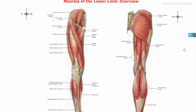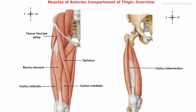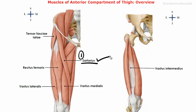Let's start with the anterior compartment of the thigh. Here we can see the muscles of this compartment. We'll see the location of these muscles one by one, then learn individual muscles in detail under four headings: origin, insertion, nerve supply, and action. The first muscle is sartorius — present obliquely in the anterior aspect of the thigh. It is the longest muscle of the body, arising from the anterior superior iliac spine and going up to the tibia.